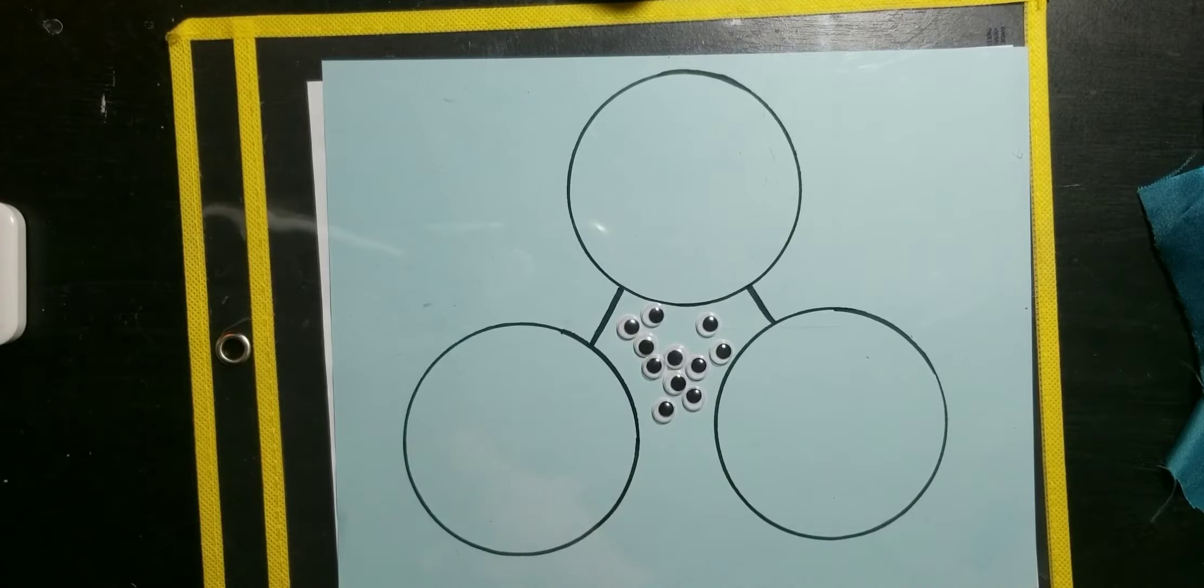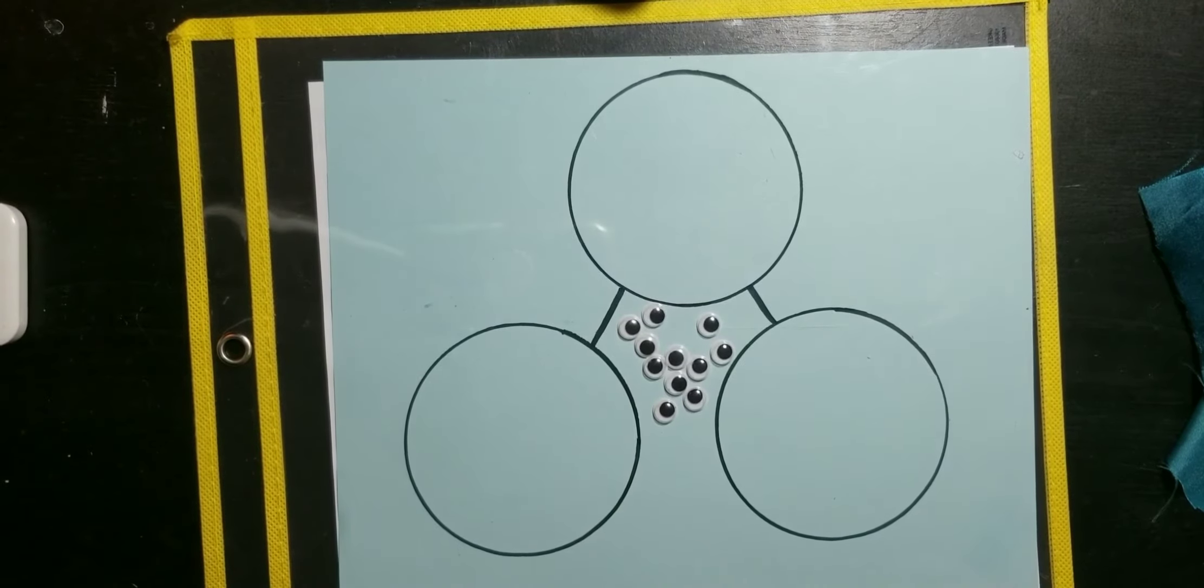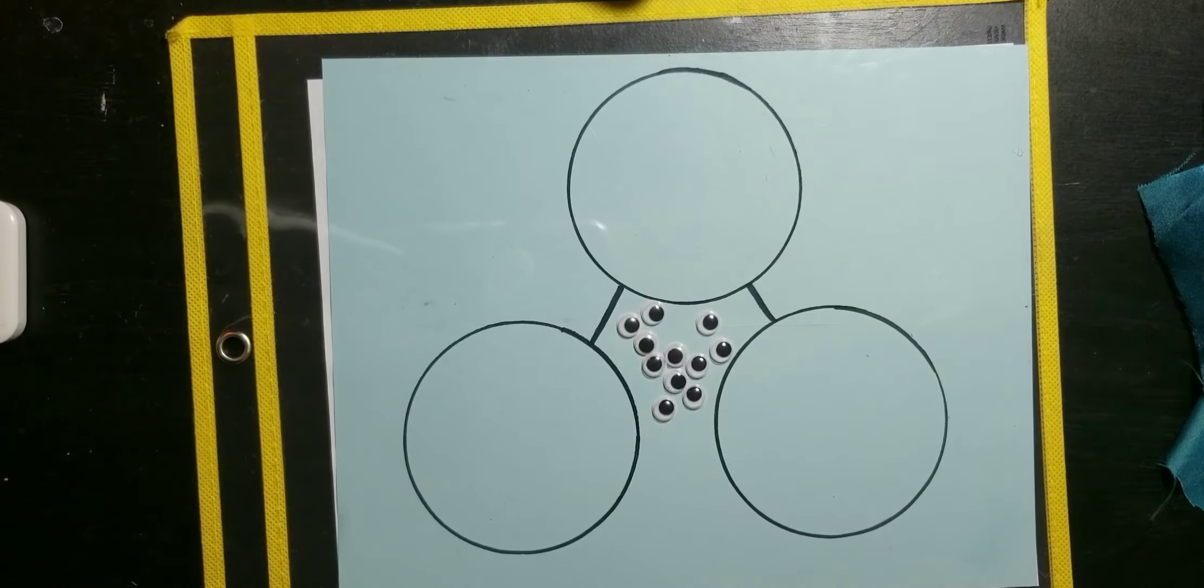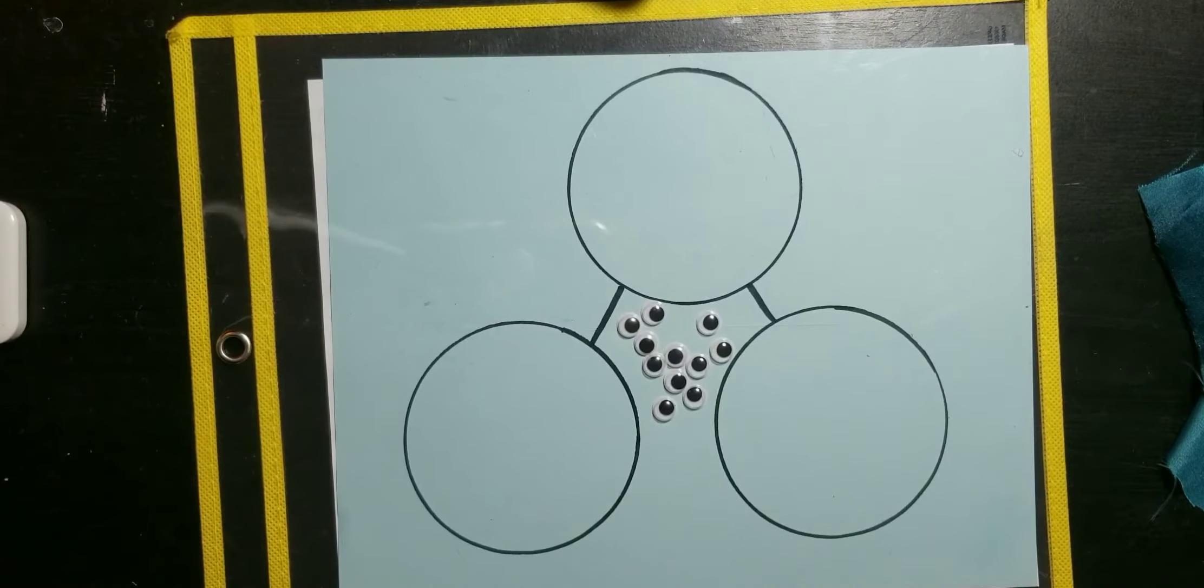Okay, for our next story problem, this story, we're going to use googly eyes. So, I decided to use a monster number bond story. So, listen to the story first. Then, we'll put the googly eyes where they should go in the parts and we'll add them together to make the whole. So, the green monster has five googly eyes. And the blue monster has three googly eyes. How many eyes do they have all together?